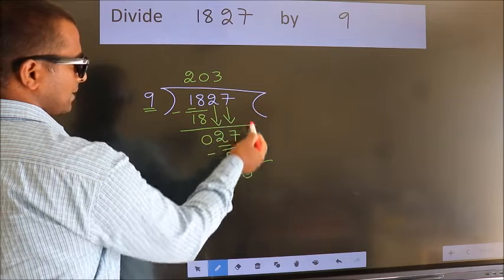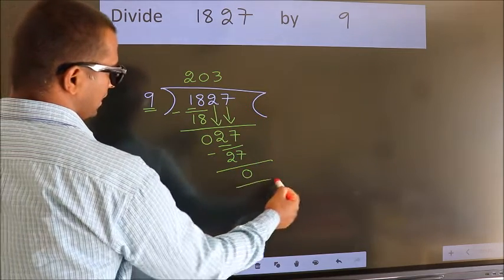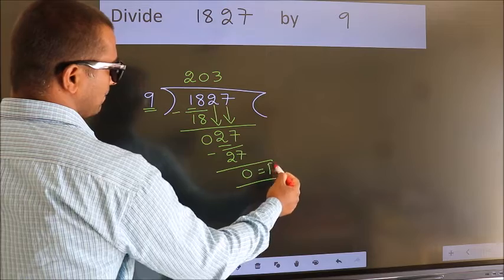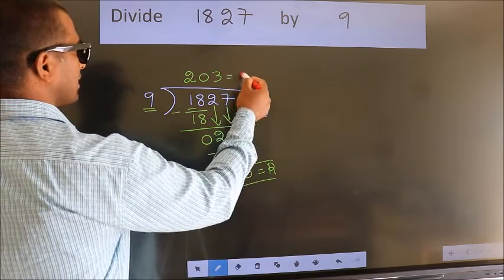No more numbers to bring it down. So we stop here. This is our remainder. This is our quotient.